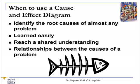When do we use a cause and effect diagram? It can be used to help identify the root causes of almost any problem you can think of. This type of diagram is learned very easily by people and is very useful in helping teams reach a shared understanding of a complicated problem. We can also use them to organise and analyse relationships between the causes of a problem. Basically, it's very good when something has gone wrong and we don't know what it is, and we use the diagram to help figure out what is causing the problem.